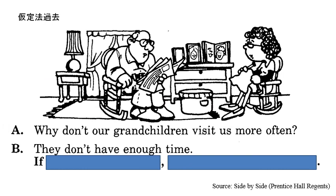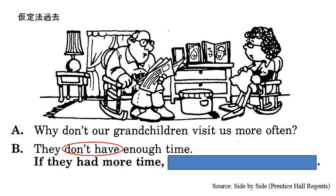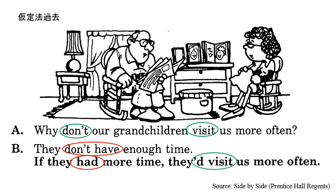Please look at the picture and the conversation. What can you fill in the blanks? A says: Why don't our grandchildren visit us more often? And B says: They don't have enough time. The reality is that they don't have enough time, so the if sentence should begin with: If they had more time — you have to use the past verb here. Then the second part: their grandchildren don't visit them very often, so the if sentence can be something like: They'd visit us more often. 'They'd visit' means 'would visit.'